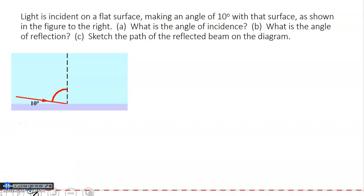Next question: light is incident on a flat surface making an angle of 10° with the surface, as shown in the figure. What is the angle of incidence? What is the angle of reflection? Sketch the path of the reflected beam on the diagram. So you have a light ray incident on a plane mirror, hitting the surface at an angle of 10°.